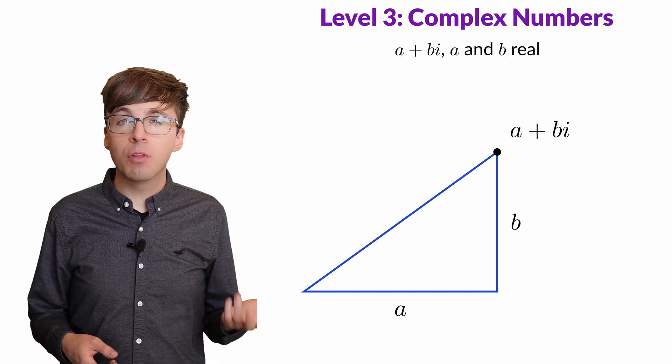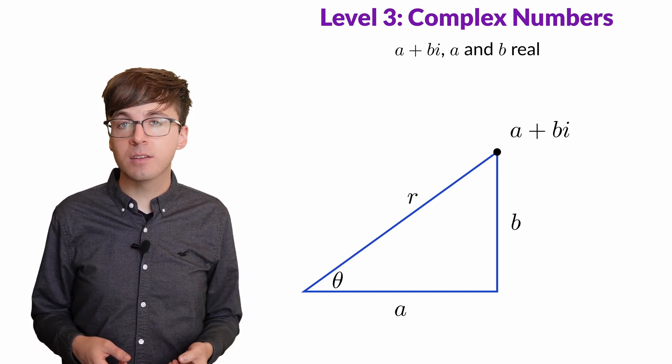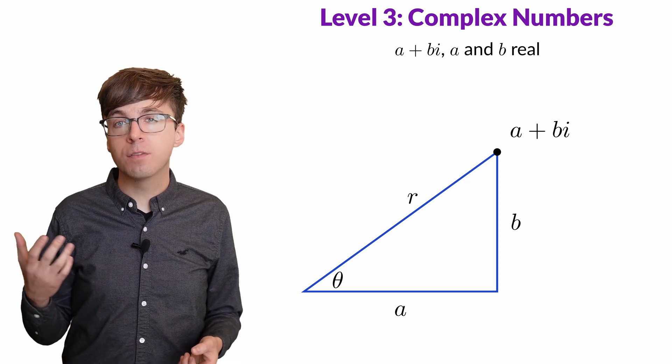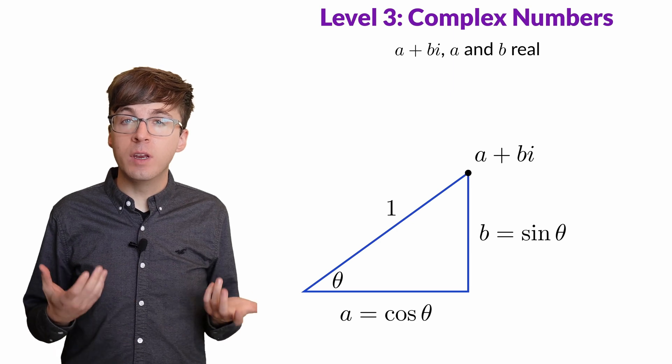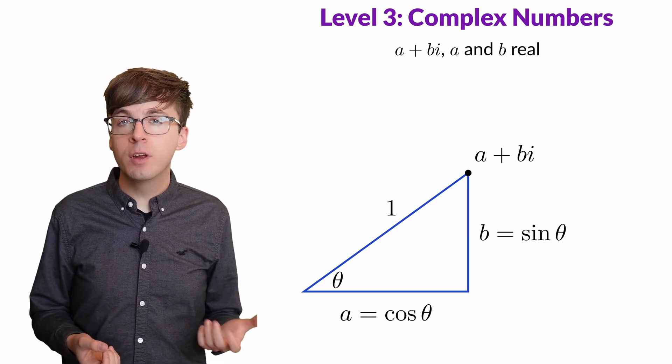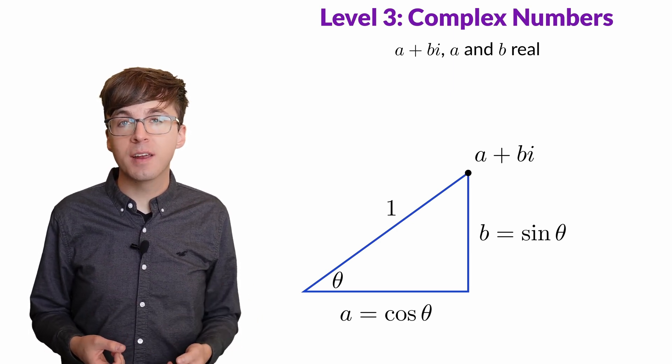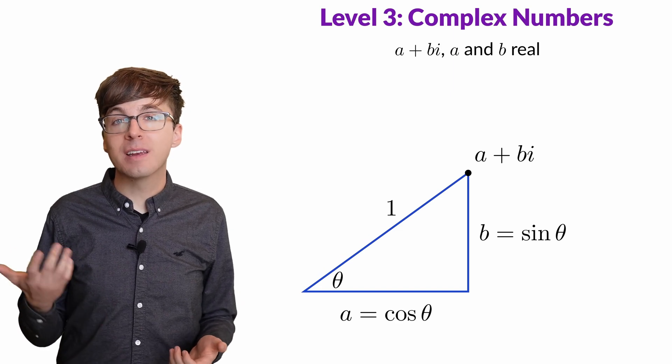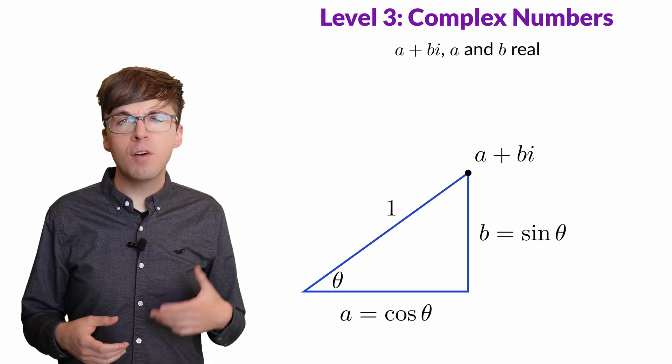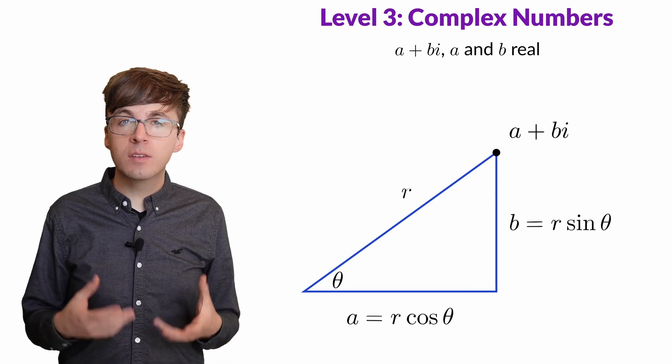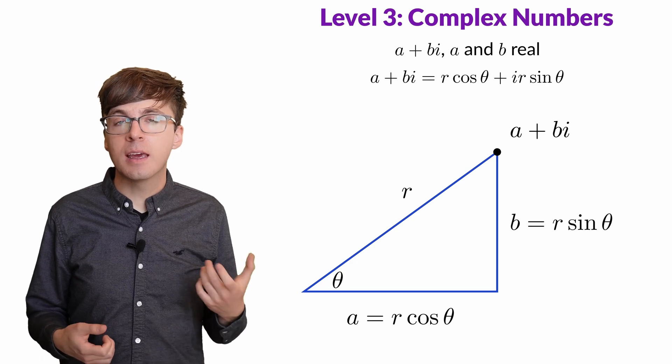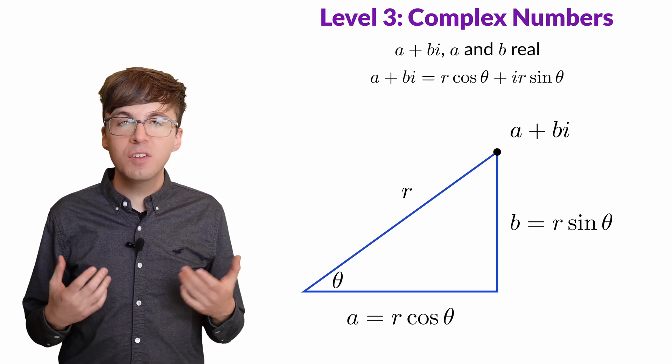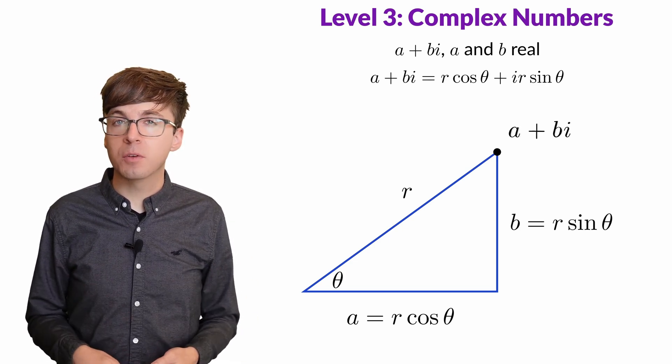We measure the angle θ from the positive x-axis and the distance r from the origin. If the distance r equals 1, then we know from the unit circle that the real part of this number is cos(θ) and the imaginary part is sin(θ). If r is not 1, then we can scale the picture by r and get the real and imaginary parts are r·cos(θ) and r·sin(θ). This gives us the polar form of complex numbers.